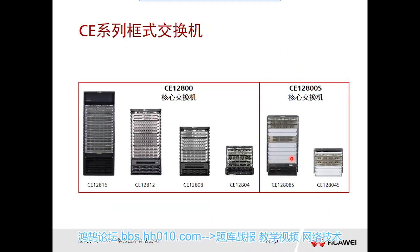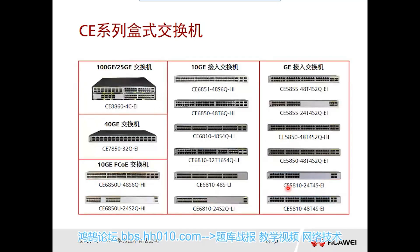Now let's look at the CE series chassis switches — CE12800. The CE12800 is divided into two categories: the core switch CE12800 and CE12800E. The CE12800 series includes CE12804, CE12808, CE12812, and CE12816. The CE12800S series has two models: CE12804S and CE12808S. These are the rack-mounted chassis switches.